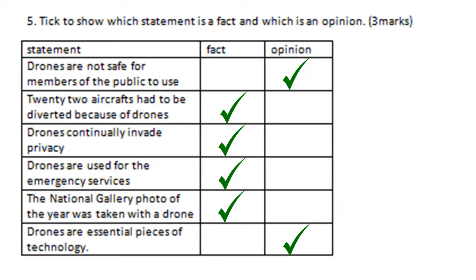An opinion is something that you think. Some people think drones are not safe for members of the public; however, some people think they're great and safe if used correctly — so 'all drones are bad and not safe' is somebody's opinion. 'Drones are an essential piece of technology' is also an opinion — a teenage YouTuber might think they're essential, but a grandma who doesn't care about taking photos probably wouldn't. It completely depends on the person, so that is an opinion. Check your answers and see if you get the marks correct.